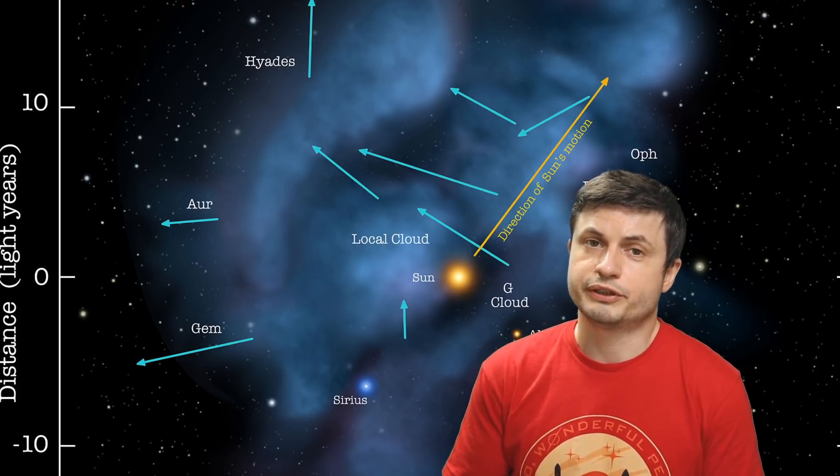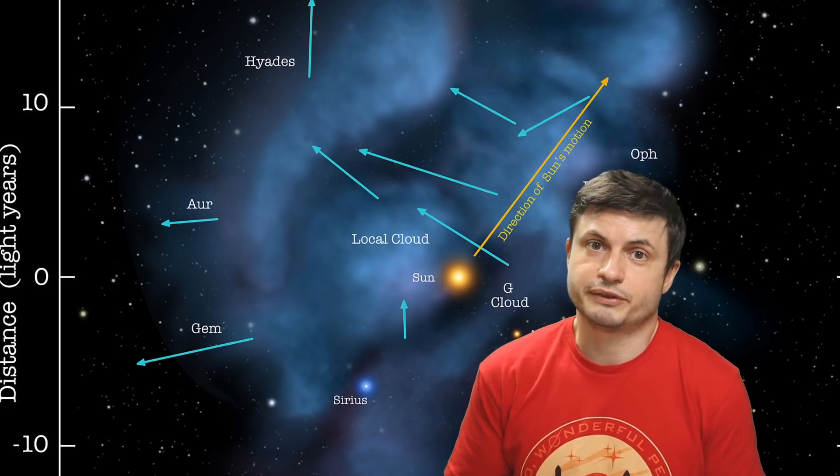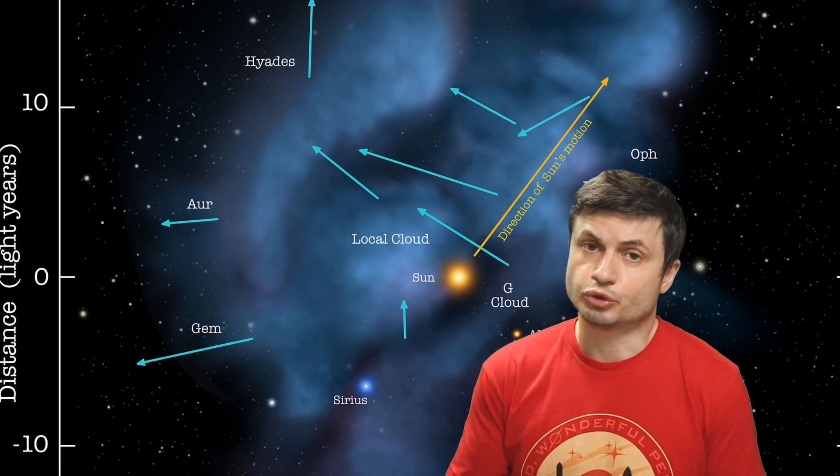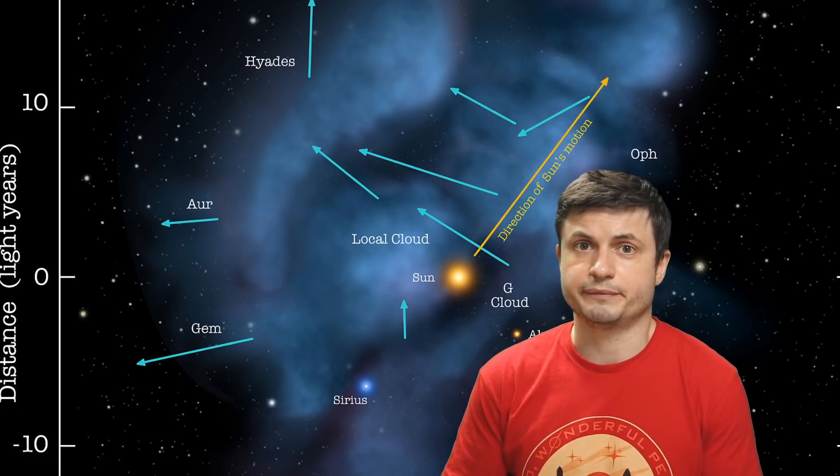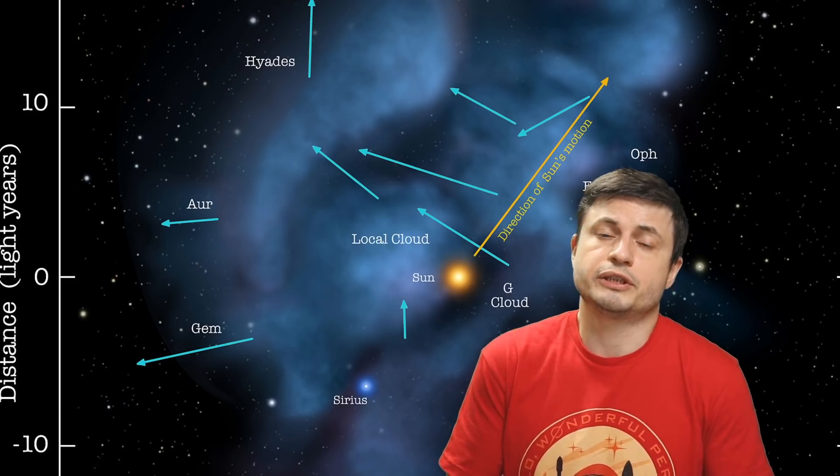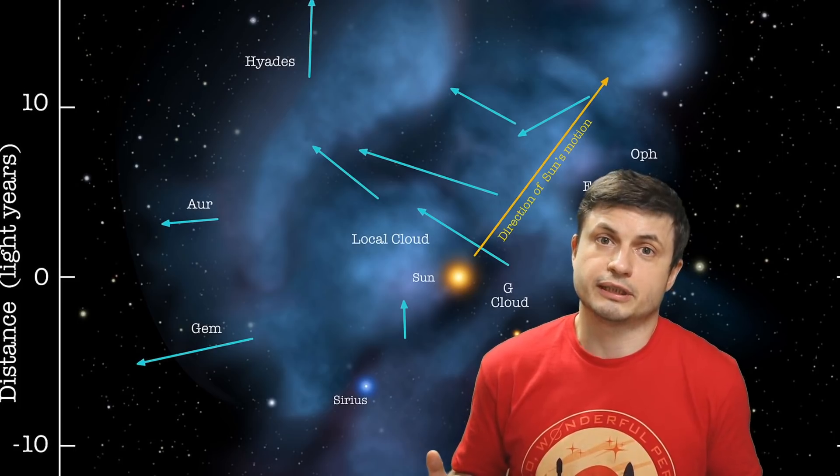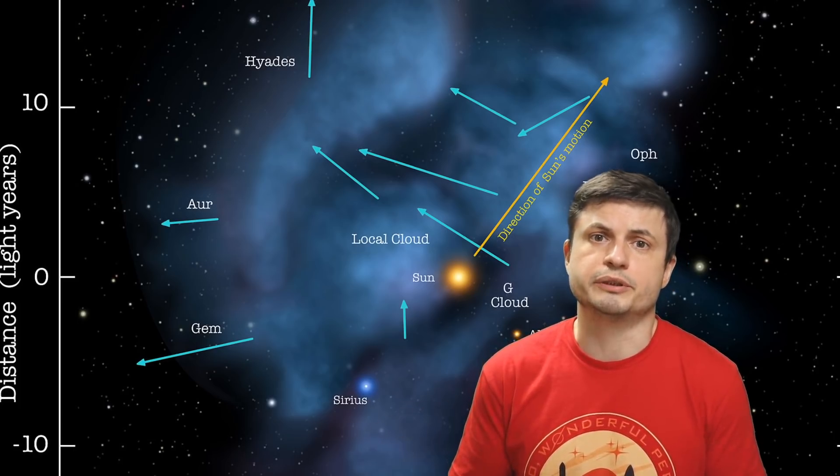But the Voyager probes discover that it also seems to possess quite a strong magnetic field, which essentially holds this cloud together. And there are a lot of these clouds all over the galaxy. Now the magnetic field here is obviously not as strong as the planet Earth, but it is strong enough to more or less keep this cloud as a cloud for millions and millions of years.